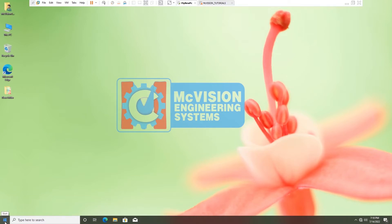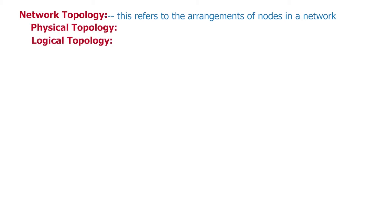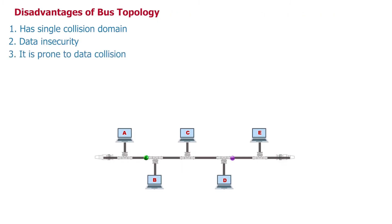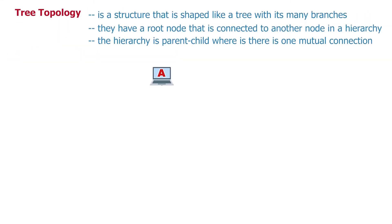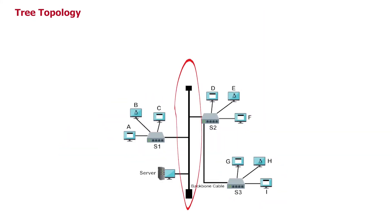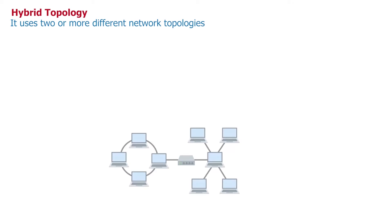Before we begin, let's have a quick look at the previous lesson. In the previous lesson we learned about network topology. We said that it refers to the arrangement of the nodes in a network, and that this arrangement can be physical or logical. We also talked about the various types of topologies and their merits and demerits. I highly recommend that you watch the previous lessons before you continue with this one.